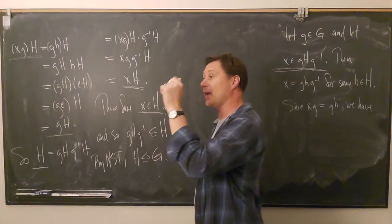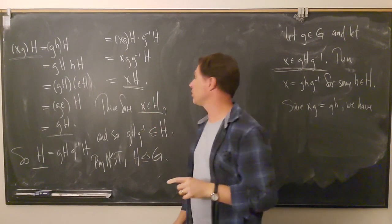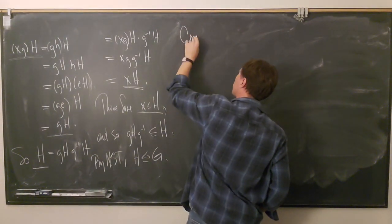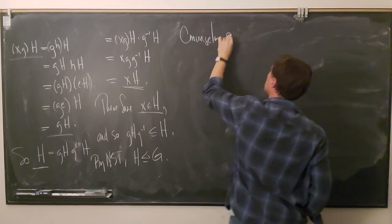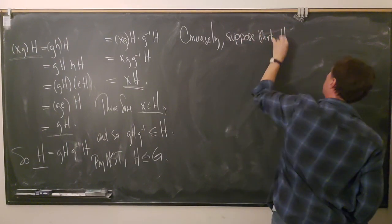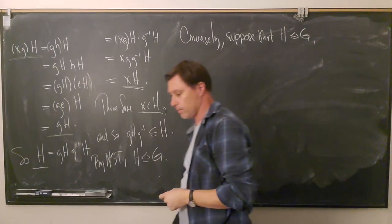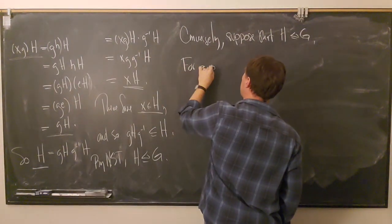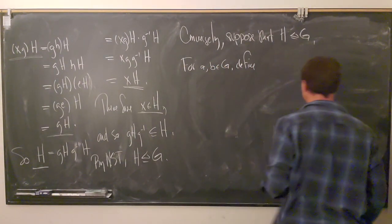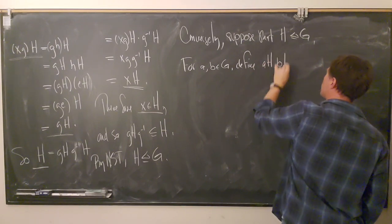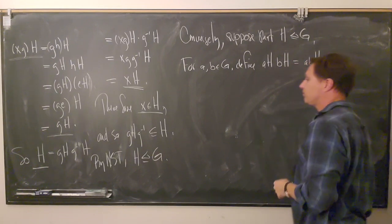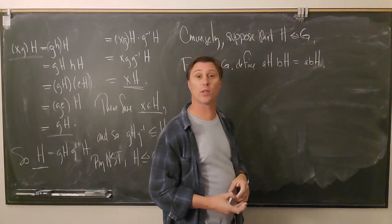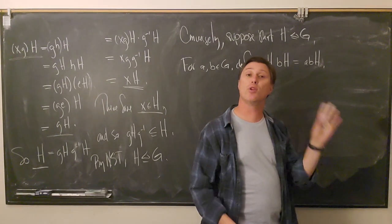So what we showed was: if coset multiplication is well-defined, then we have a normal subgroup. Let's consider it from the other direction also. Conversely, suppose that we started off with H a normal subgroup of G. For A and B in capital G, let's define AH times BH equal to ABH. What I'd like to do is show that with the assumption that we have a normal subgroup, this is actually a well-defined operation. So: well-defined implies normal, and now we're going to show normal implies well-defined.